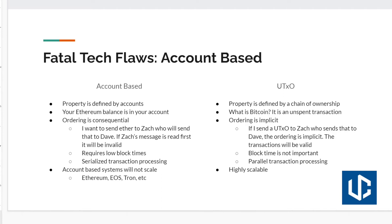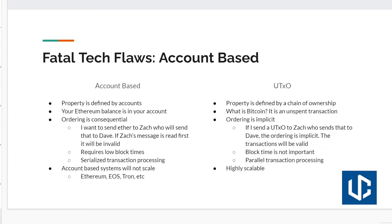The other important thing is that ordering is implicit. It functions like cash, where Ethereum functions like a bank account. So let's imagine I want to send $5 to Zach, and then Zach's going to send $5 to Dave. If we wanted to do it with cash, I could hand Zach a $5 bill, and he turns around and hands that $5 bill to Dave.